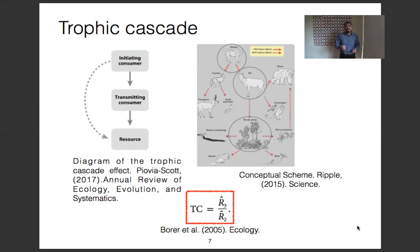Body size can cause variation in the strength of the trophic cascade.